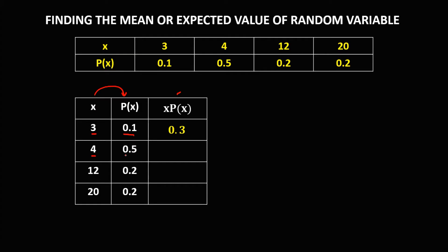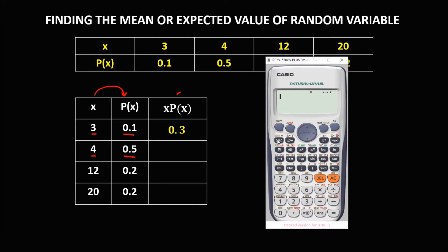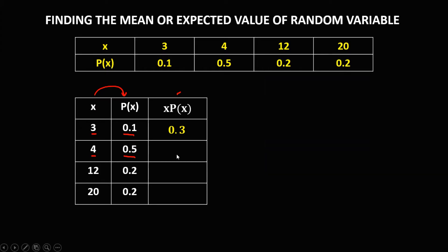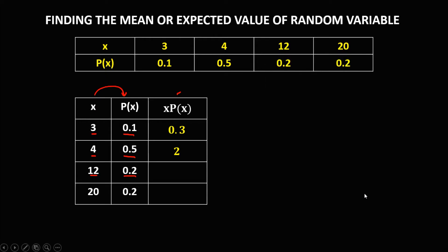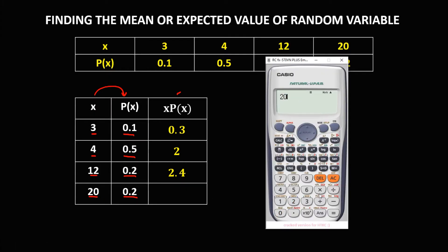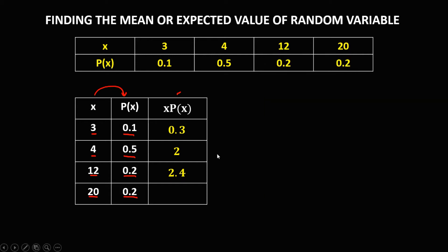Then 4 times 0.5, that's 2. Then 12 times 0.2, that's 2.4. And 20 times 0.2, that's equal to 4.